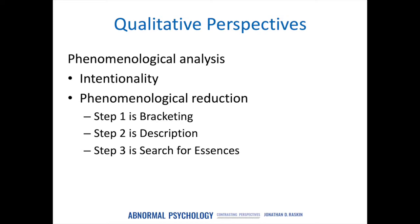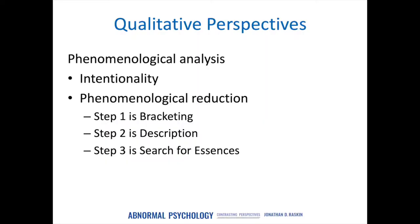Step two involves description: the researcher obtains descriptions of what's being studied from participants — we get participants to tell their stories. The third and final step is the search for essences. We try to take these participant descriptions and break them down into meaningful units that cut across different people's descriptions, looking for commonalities across participants. The results are then considered the essences of what's being studied — for example, the essence of the experience of having hallucinations.